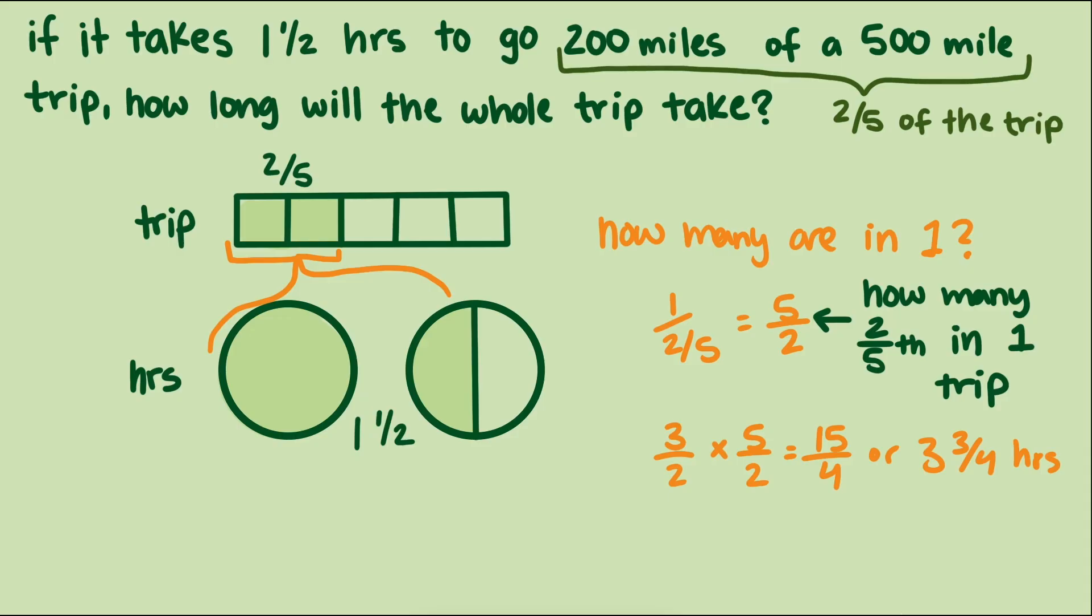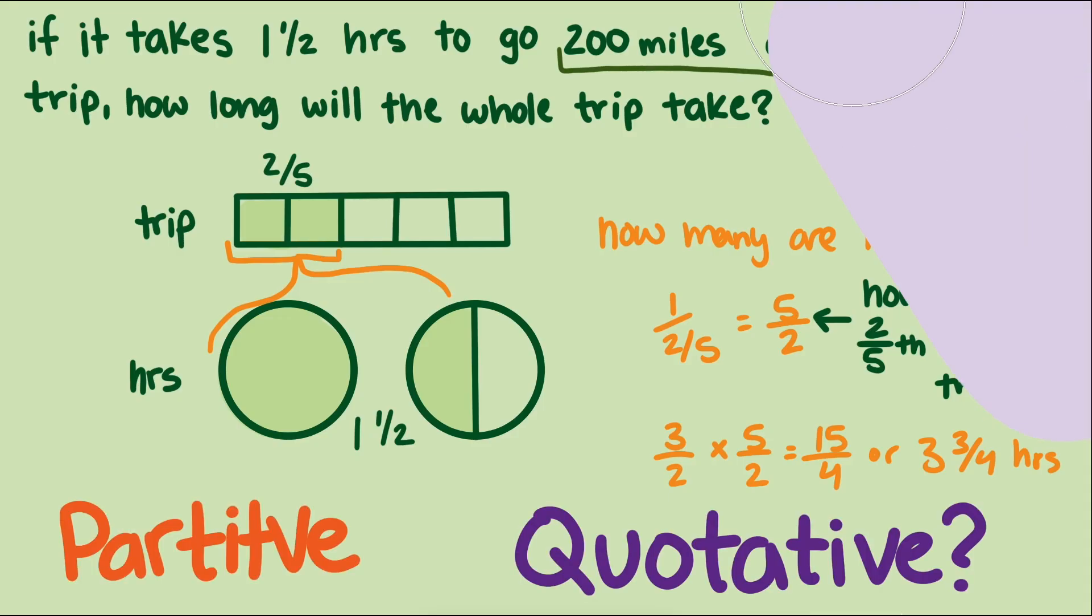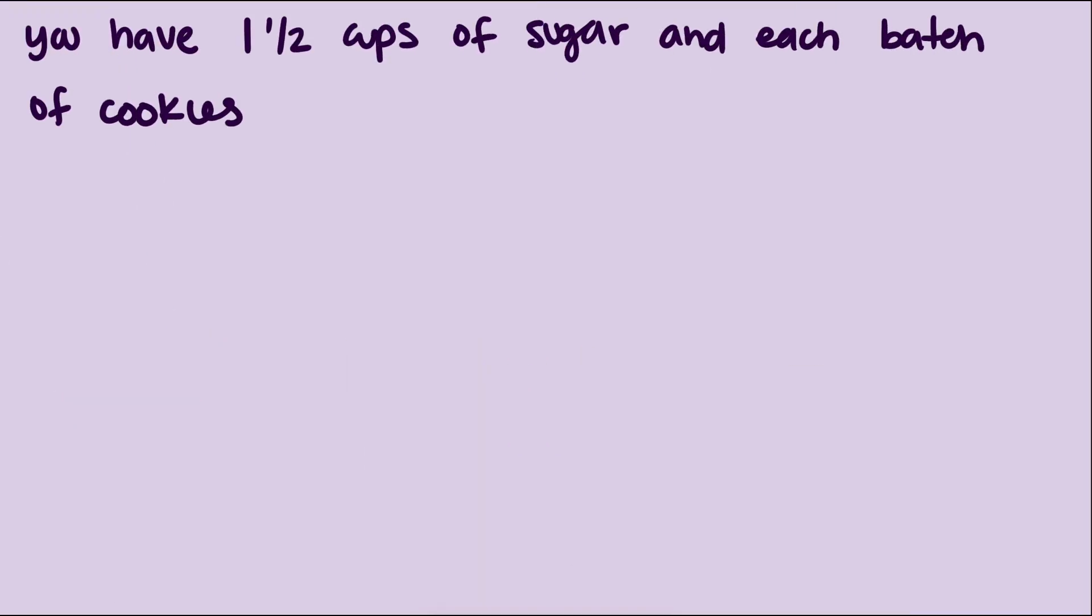So this context really lends itself well to partitive division. What about quotative or measurement? A common context that works well is baking. Let's say I have one and a half cups of sugar, and each batch of cookies needs two-fifths of a cup. How many batches can I make?